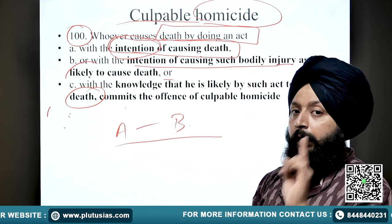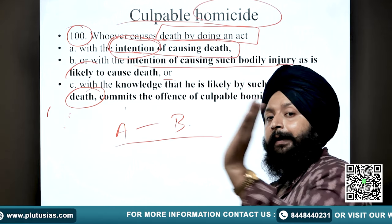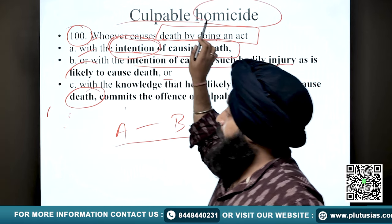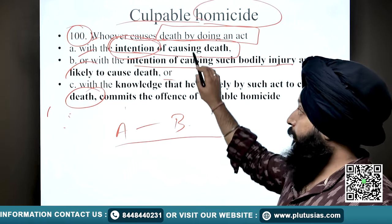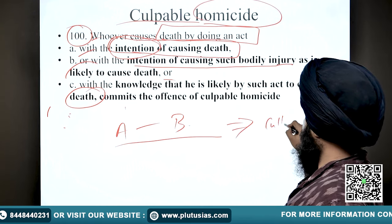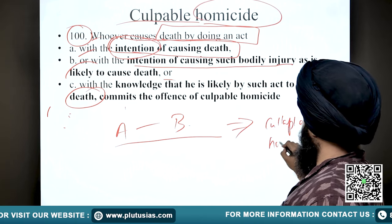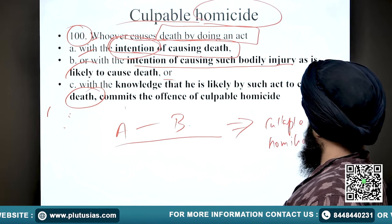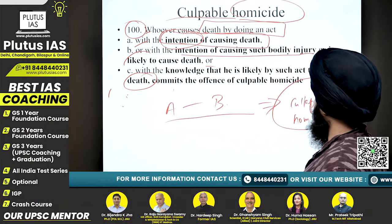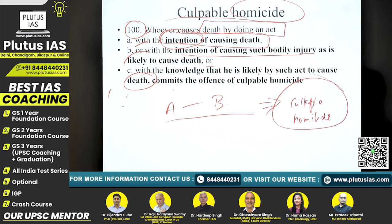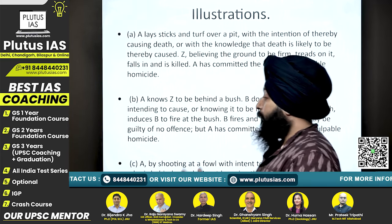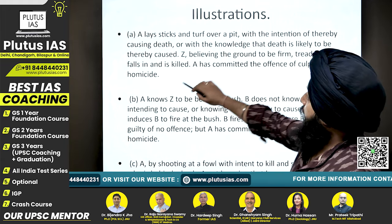So the first thing is: if there is a commission of an act and the act has caused death, we have to look at these three ingredients. If any of the ingredients is fulfilled, that means the offense of culpable homicide has been committed.